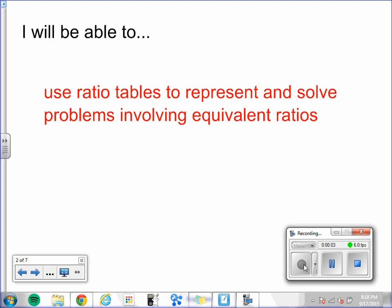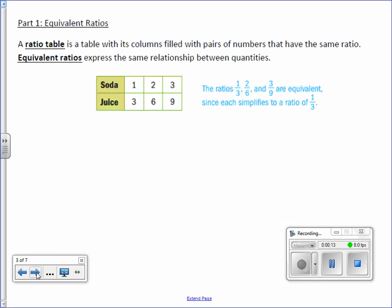Chapter 1 Lesson 4 Ratio Tables. You will be able to use ratio tables to represent and solve problems involving equivalent ratios. A ratio table is a table with its columns filled with pairs of numbers that have the same ratio.